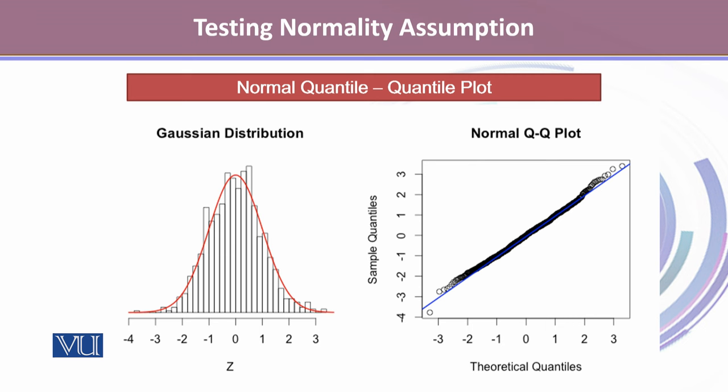With real data, the normal QQ plot may look slightly different. Generally, we do expect all the dots to fall right on this line, but it doesn't happen in most cases — there is always a slight departure from the line towards the tails. We can compare a histogram, a frequency curve, and a normal QQ plot for a given data set, where we have theoretical quantiles on the x-axis and sample quantiles on the y-axis. This shows that the normality assumption holds true using the histogram, frequency curve, as well as the normal QQ plot.